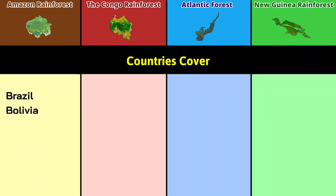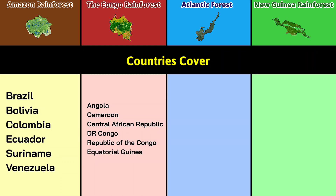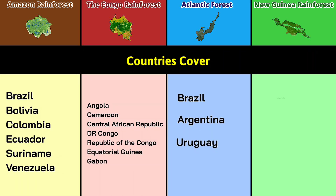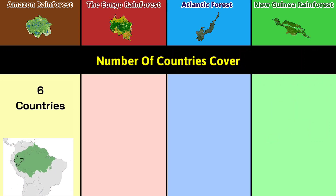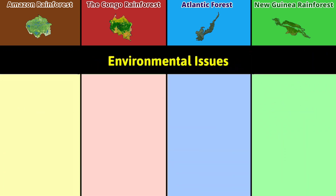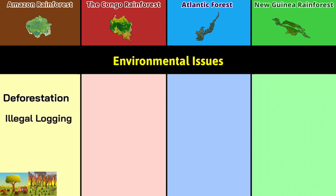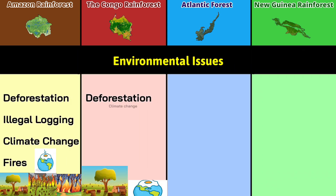Countries covered — Amazon: Brazil, Bolivia, Colombia, Ecuador, Suriname, and Venezuela. Congo: Angola, Cameroon, Central African Republic, Democratic Republic of the Congo, Republic of the Congo, Equatorial Guinea, and Gabon. Atlantic Forest: Brazil, Argentina, and Uruguay. New Guinea: Indonesia and Papua New Guinea. Number of countries: six, seven, three, and two.